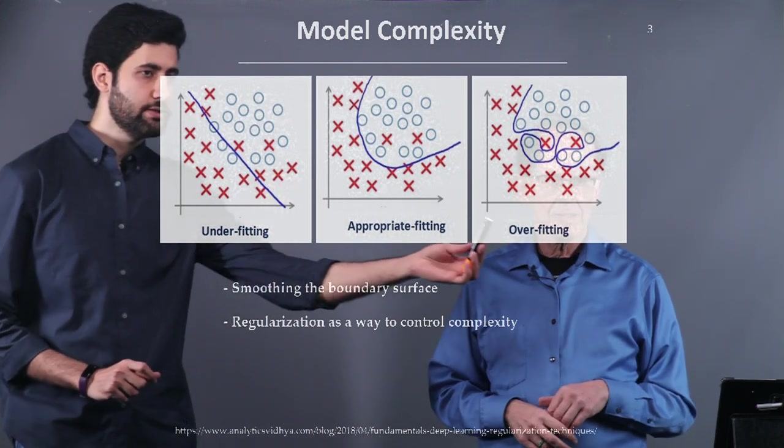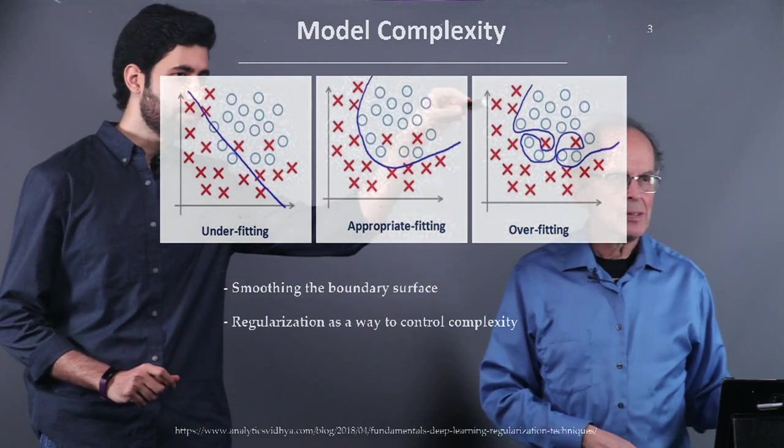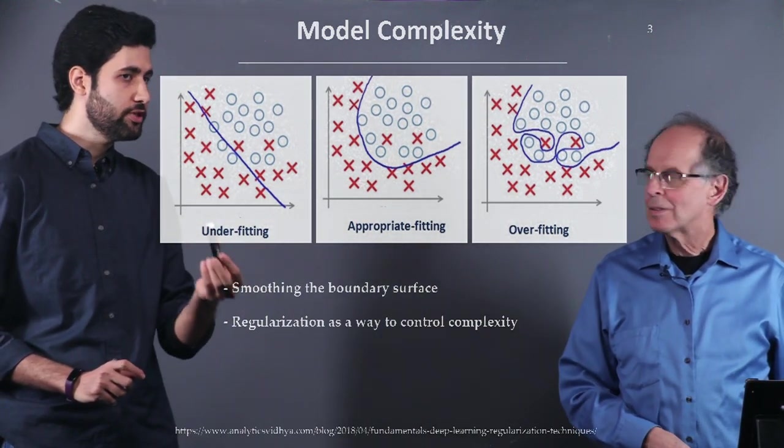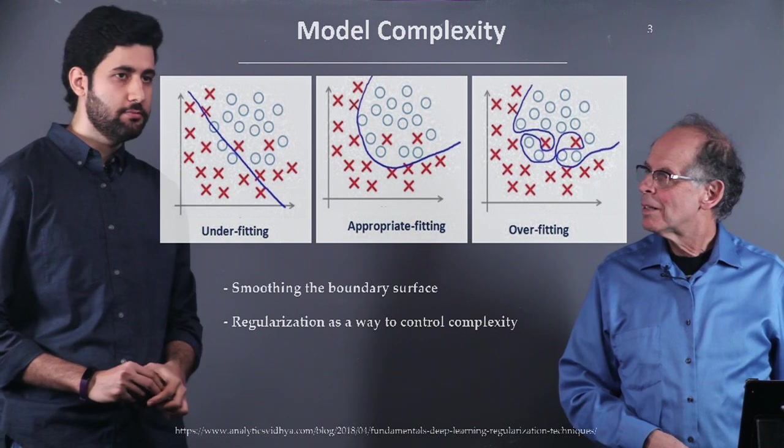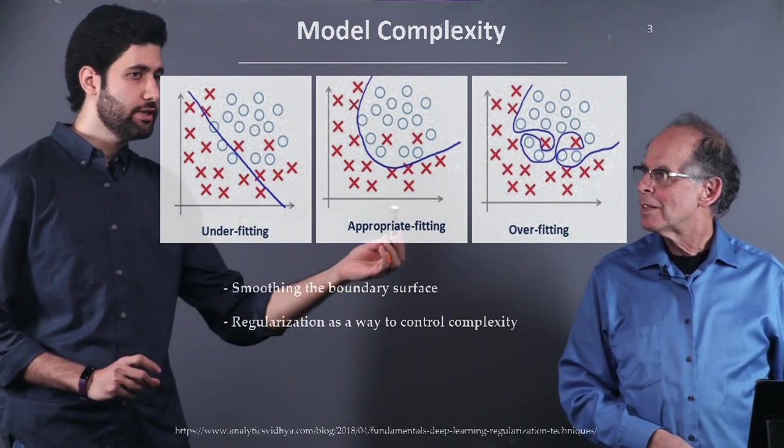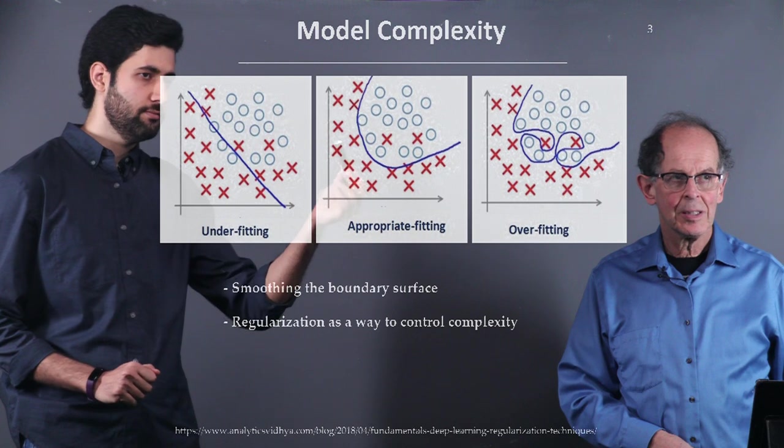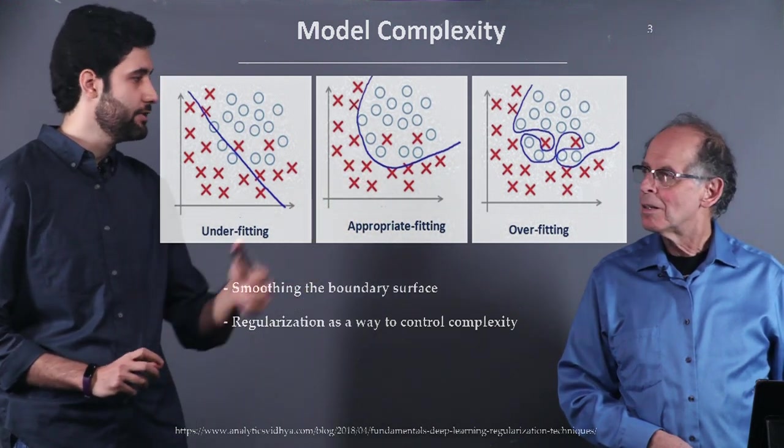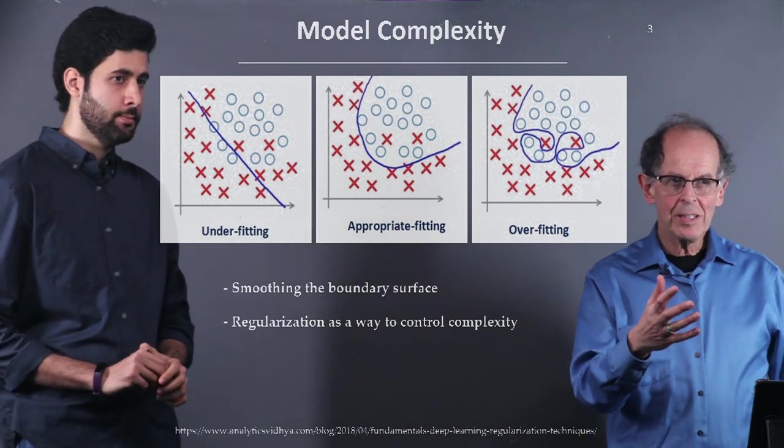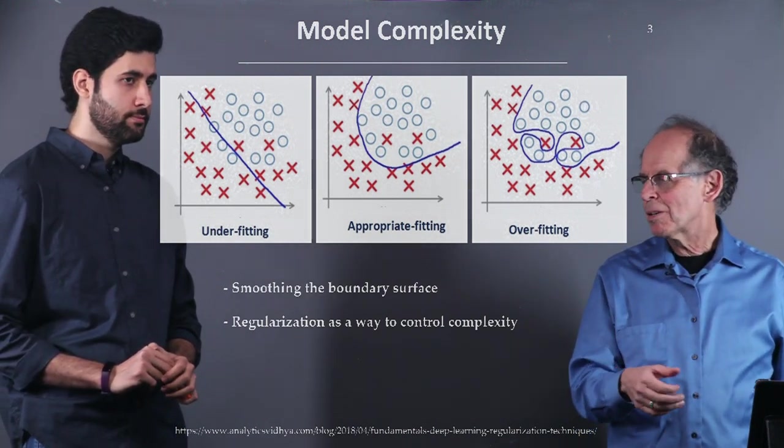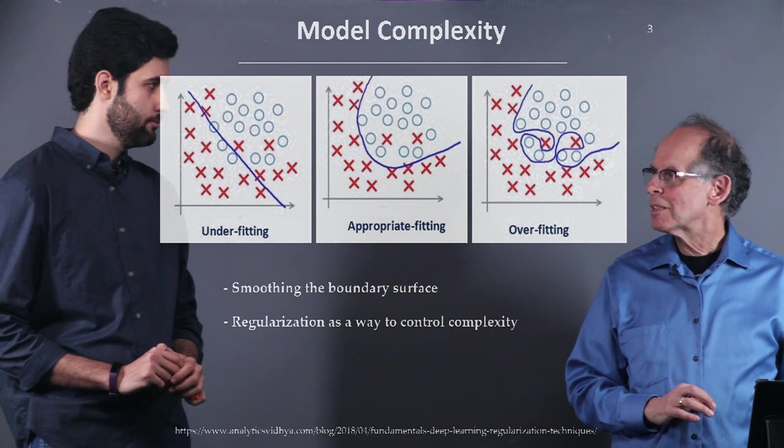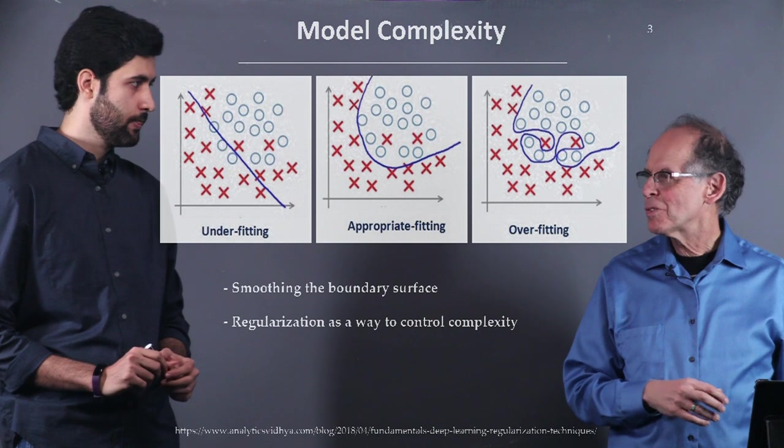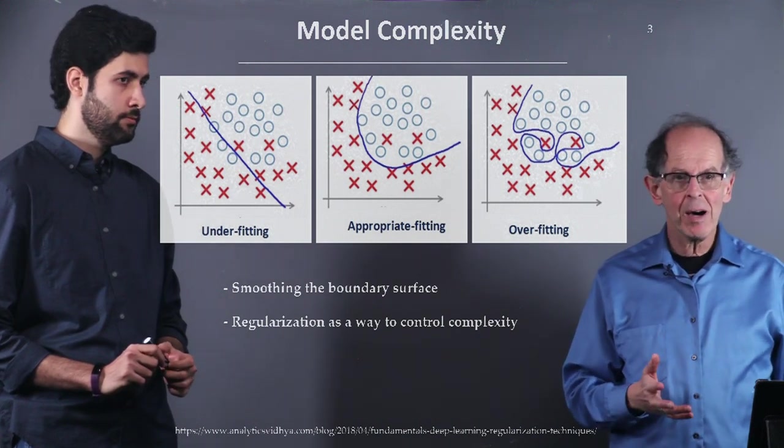Do we prefer something like this, which is a very shaped boundary surface, decision surface, or something like this, which is a very simple boundary surface, or something like this, which is not that complicated, but it seems to be a good fit for separating two classes. So we have this idea, regularization, which we are going to look at in more detail as a way of reducing the complexity of the surface and reducing really our model complexity.